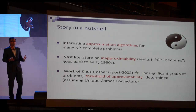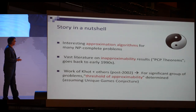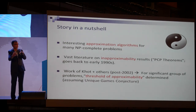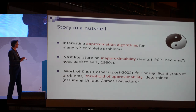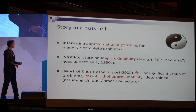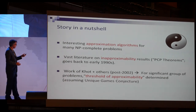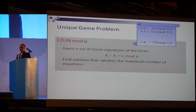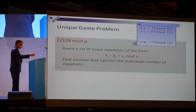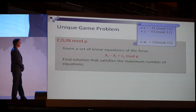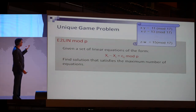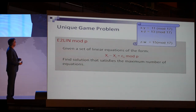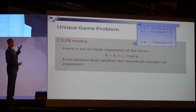When I say the threshold is 'determined,' it means we have an algorithm and we can show it is optimal, though we may not know precisely how well that algorithm does. So what is the unique games problem? You're given a set of linear equations modulo a prime — the prime just needs to be sufficiently large — and you're trying to find a solution to the variables that satisfies the maximum number of equations.